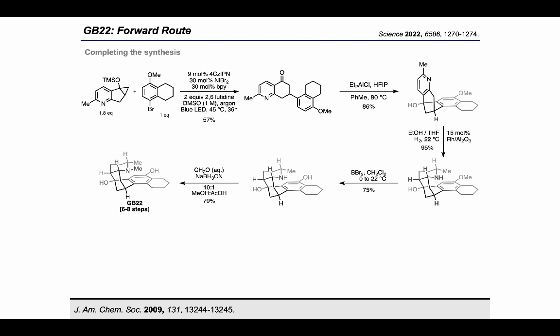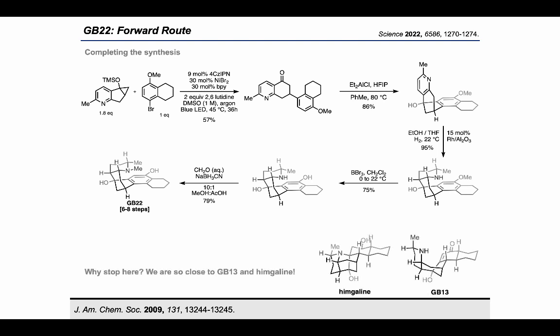With the photochem and Friedel-Crafts optimized, we proceeded with a pyridine hydrogenation protocol developed by the Sarpong lab in their synthesis of GB-13 from 2009. The remaining two steps of the route are simple and high-yielding: demethylate the anisole and methylate the secondary amine via reductive amination. With that, we have a six-to-eight-step synthesis of racemic GB-22, depending on which pyridine synthesis route you use and what you consider commercial.